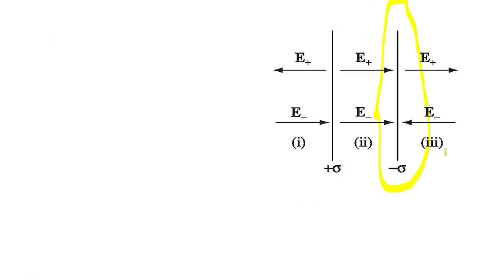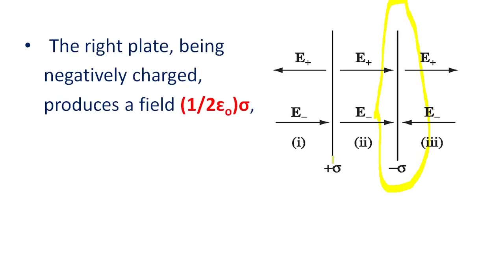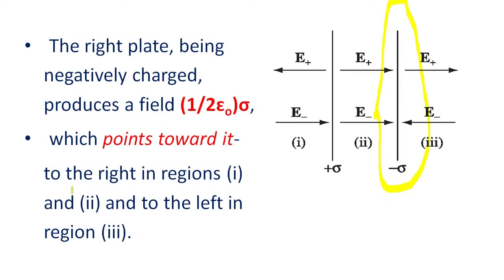Now neglecting plane one and considering plane two: the right plate produces a field of sigma over two epsilon zero. Since it is negatively charged, the field points towards it — to the right in regions one and two, and to the left in region three.